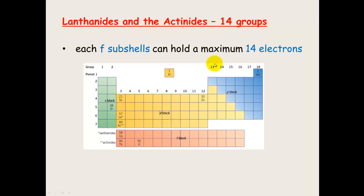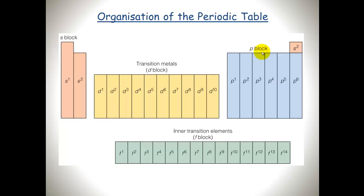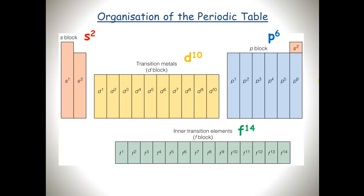You have got the lanthanides and the actinides and these are the F subshells being filled. 14 columns, they can fit 14 electrons. And that is how the periodic table is currently organised. P being able to hold 6, D being able to hold 10 and F being able to hold 14. Always remember that the number of outer shells equals the number of the period or the horizontal row.